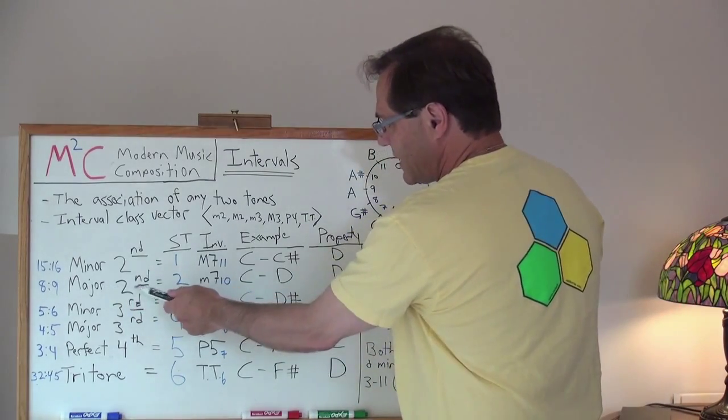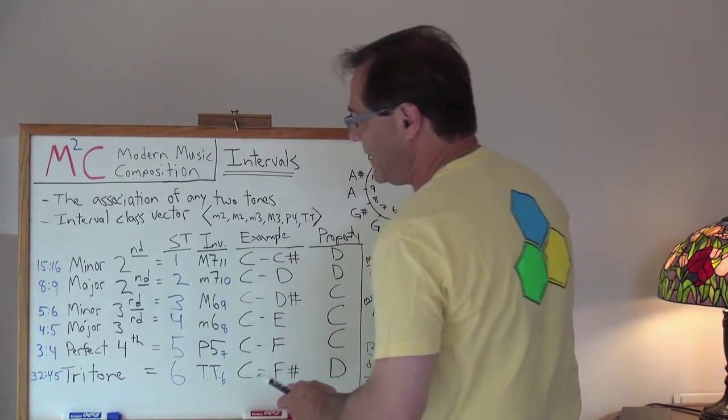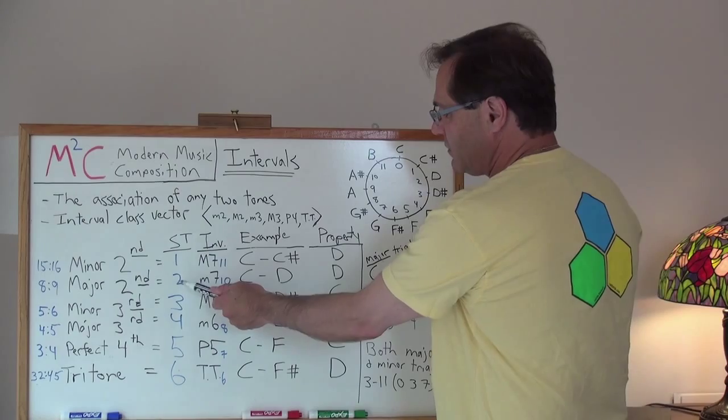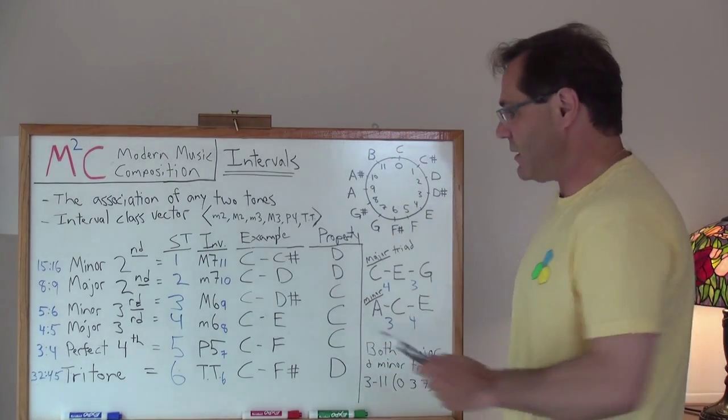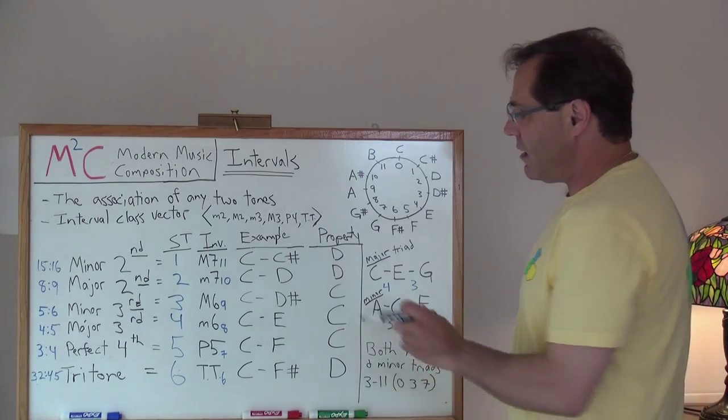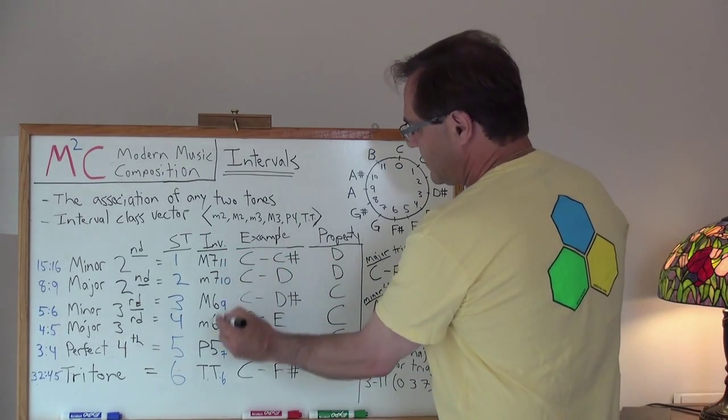Moving on, we have the major second. Its ratio is 8 to 9. It has associated with the interval two semitones. So an example of that would be between C and D. Oh, I should explain this column too.